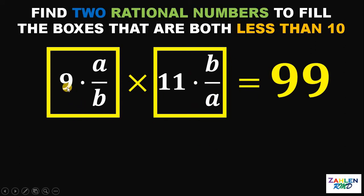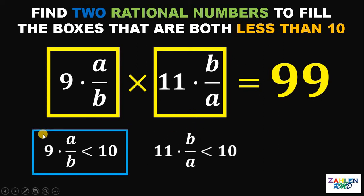Now, the problem is this 9 times A over B must be less than 10. Also, this 11 times B over A must be also less than 10. Let's focus on this first inequality. Let's multiply both sides by B, and then divide both sides by 10. Now, divide both sides by A. This will give us that 9 over 10 must be less than B over A.